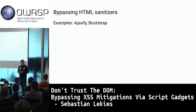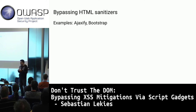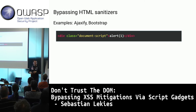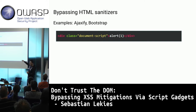Here's an example from a library called Ajaxify — not part of the 16 popular libraries, but too weird not to show. Ajaxify has a class called document-script. If you put it anywhere, it magically turns the element into a script tag: it takes the value, creates a new script tag, writes to it, and appends it to the DOM.